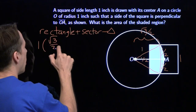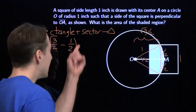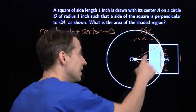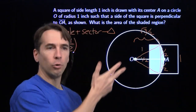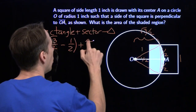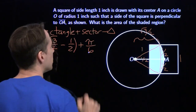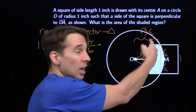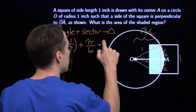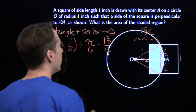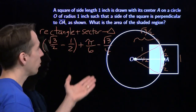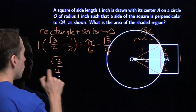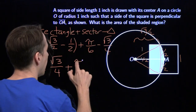The rectangle is 1 times (√3/2 minus 1/2). Now we need to add in the sector. This is an equilateral triangle, so this angle is 60 degrees. The whole circle is 360, so this sector is one-sixth of the whole circle. The whole circle has area π, so one-sixth of that is π/6. Then we subtract the triangle: base is 1, height is √3/2, so one-half base times height gives √3/4.